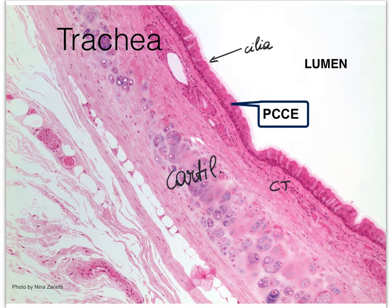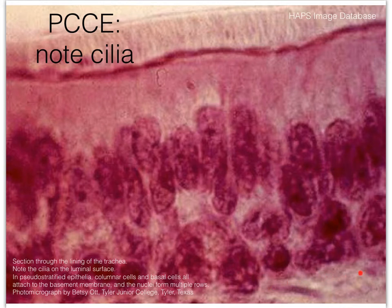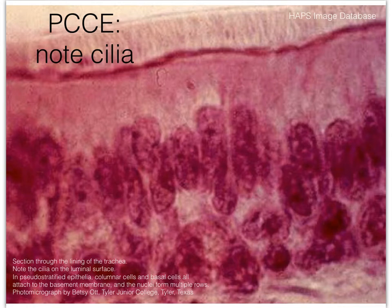The cilia are going to help with moving any particles trying to get into our lungs via the trachea, moving them back up towards the mouth. Here at very high magnification, let me get you oriented — right here is the apical surface, and here we see the cilia arising from it. The basement membrane is down below. Notice that the nuclei are kind of all over the place, which is what makes it difficult sometimes to identify this tissue as pseudostratified. I'm using this to illustrate how the nuclei are all over the place.